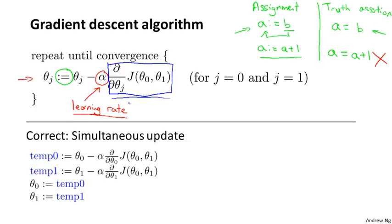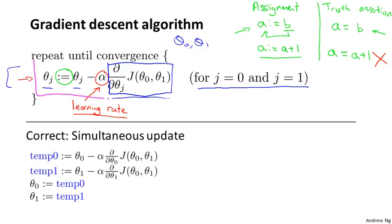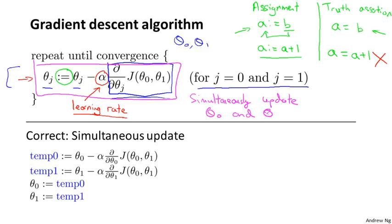Now, there's one more subtlety about gradient descent, which is that in gradient descent we're going to update theta_0 and theta_1. So this update takes place for j equals 0 and j equals 1. The subtlety of how you implement gradient descent is that for this update equation, you want to simultaneously update theta_0 and theta_1. What I mean by that is we're going to update theta_0 colon equals theta_0 minus something, and update theta_1 colon equals theta_1 minus something. And the way to implement this is you should compute the right-hand side for theta_0 and theta_1, and then simultaneously, at the same time, update theta_0 and theta_1.